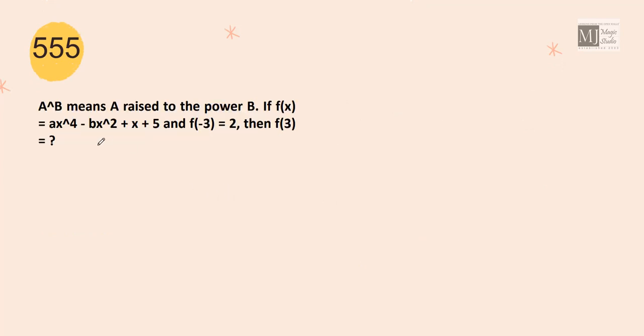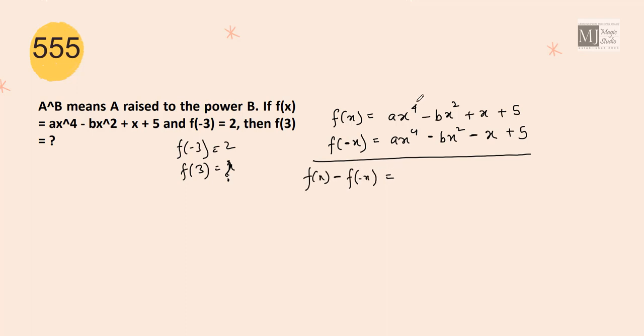Question number 555. A to the power B means A to the power B. Find Fx is Ax to the power 4 minus Bx square plus x plus 5. Now, F of minus 3 is 2. We need the value of F of 3. Let me find the value of F of minus x. That would be Ax to the power 4 minus Bx square minus x plus 5. So if I deduct these two, Fx minus F of minus x, we are left with 2x. Now, in place of x, if I put 3, then F of 3 minus F of minus 3 equals 6. So F of 3 is 6 plus F of minus 3. And we know the value of F of minus 3 is 2. 6 plus 2 is 8.